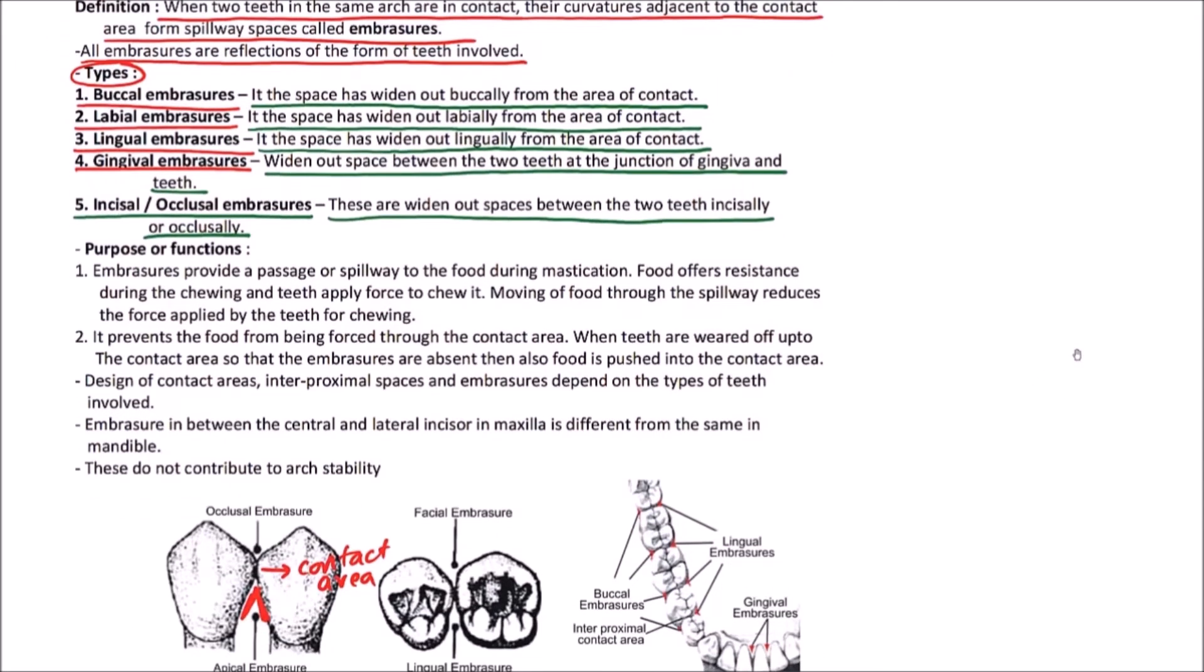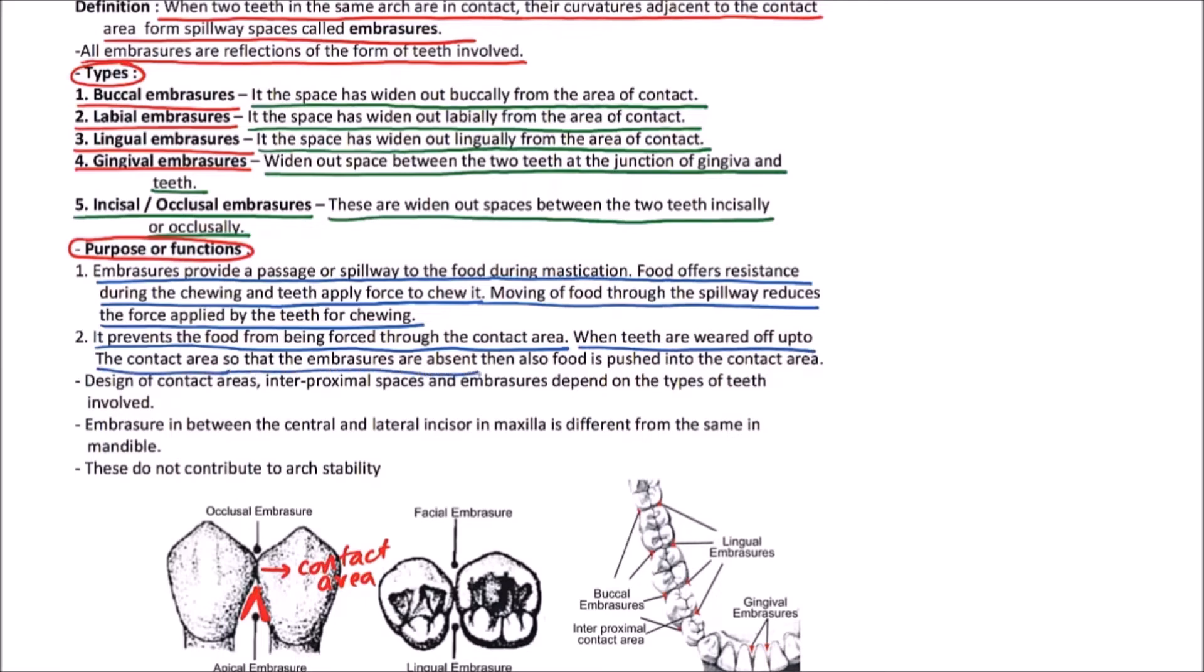Now, what is the purpose or functions of embraces? Embraces provide a passage or spillway to the food during mastication. Food offers resistance during the chewing and teeth apply force to chew it. Moving of food through the spillway reduces the force applied by the teeth for chewing. It prevents the food from being forced through the contact area. When the teeth are veered off up to the contact area so that the embraces are absent, then also food is pushed into the contact area.